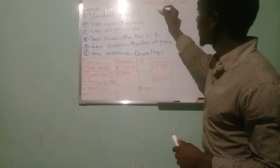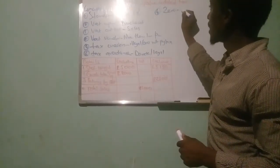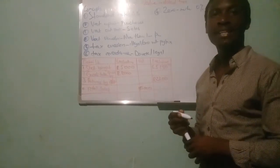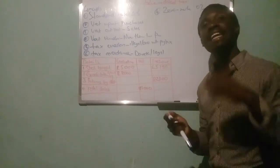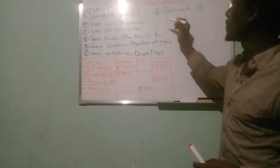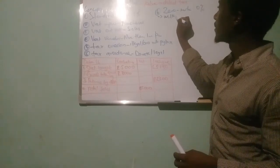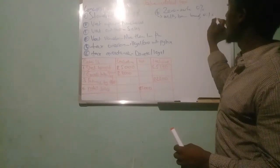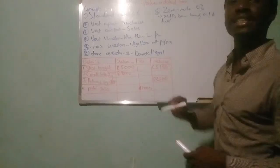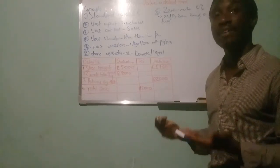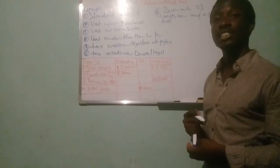We now move to what we call zero-rated items — items on which we cannot charge VAT at the standard rate; instead VAT is charged at zero percent. Businesses charging VAT at zero percent can claim a reduction from SARS of the zero percent. Examples of zero-rated items include milk, brown bread, oil, and fuel. The government may choose one day to charge, say, five percent VAT on these items, but right now their VAT rate is zero percent.